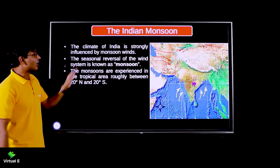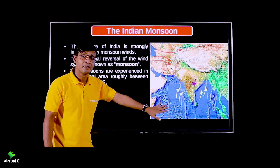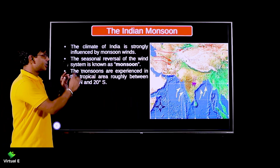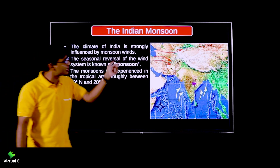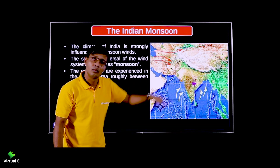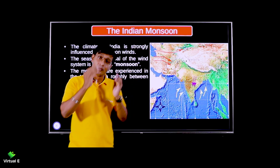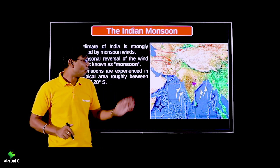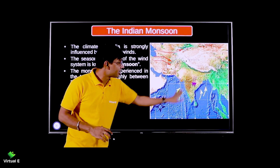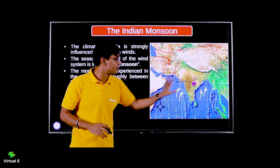Climate of India is strongly influenced by monsoon winds, which are blowing from the southwest. The next key point is the seasonal reversal of wind - the whole system is called monsoon. These winds go up and then the same winds come back down. That is why we have both monsoon season and retreating monsoon. This entire reversal of the wind system is called monsoon.